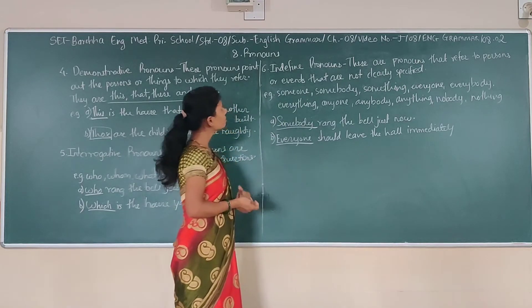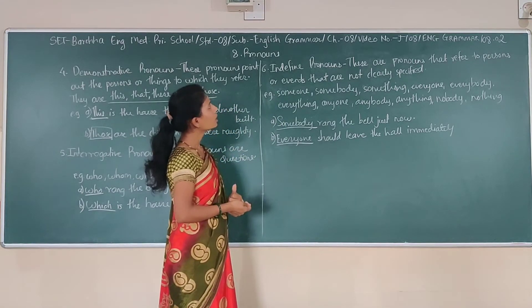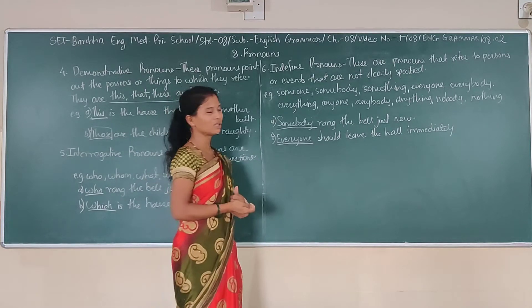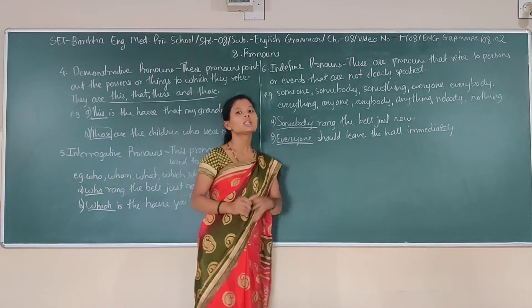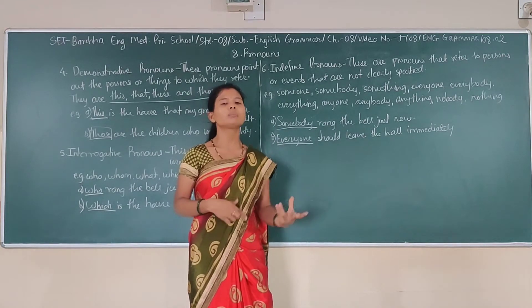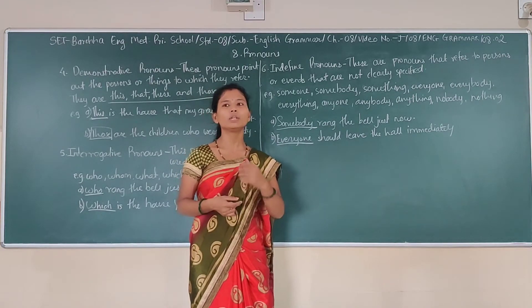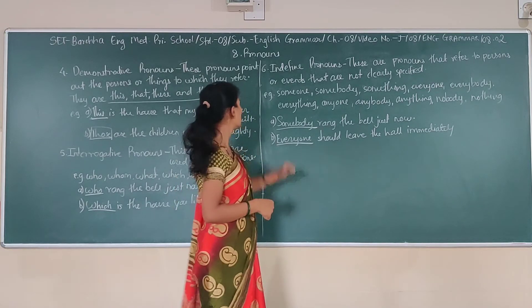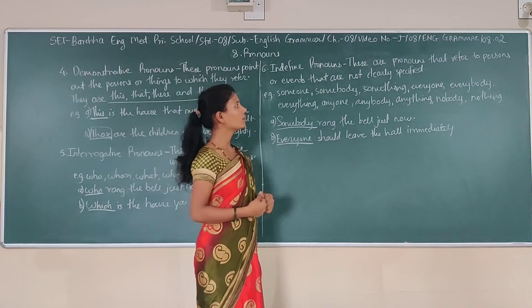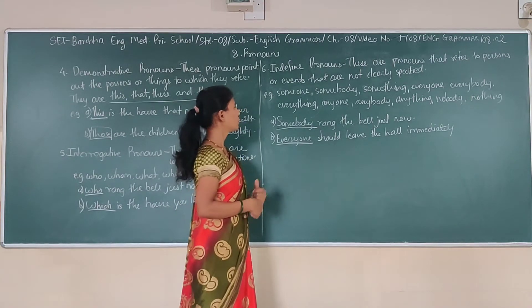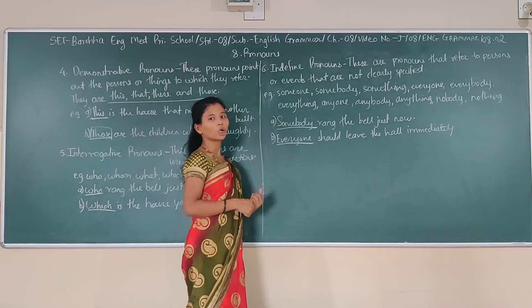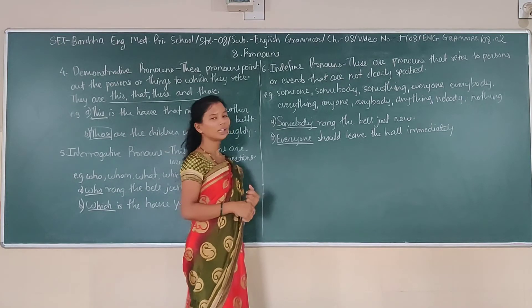Now indefinite pronouns. These are pronouns where the person or thing referred to is not clearly specified. It is just saying about something, but which is not clearly specified. Examples include: someone, somebody, something, everyone, everybody, everything, anyone, anybody, anything, nobody, and nothing. All of these are examples of indefinite pronouns.